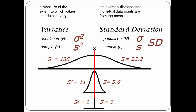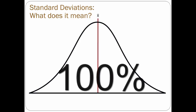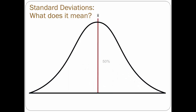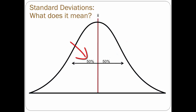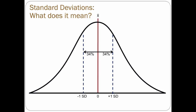Assuming you have a normal distribution, the mean would be in the center. As the whole curve encompasses 100% of the scores, 50% of the scores are higher than the mean, and 50% are lower. At the mean, the standard deviation is 0. In a normal distribution, the probability is that 34% of the scores are within one standard deviation above the mean, and about 34% are within one standard deviation below the mean.